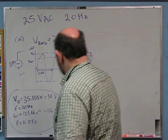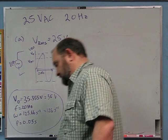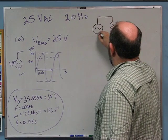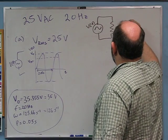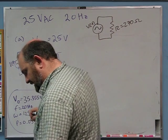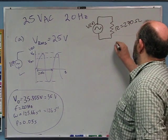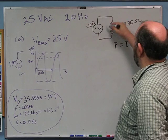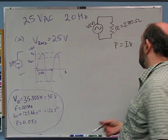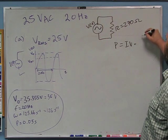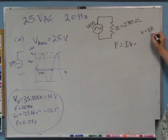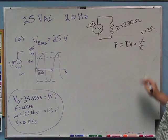Part B: if the voltage source is connected across a resistor with resistance 270 ohms, what is the maximum instantaneous power, minimum instantaneous power, and average power dissipated? Power equals IV, and for a resistor V equals IR, so I can substitute V over R for I. Power is V squared over R, so I don't even have to worry about current.